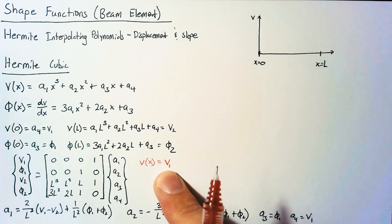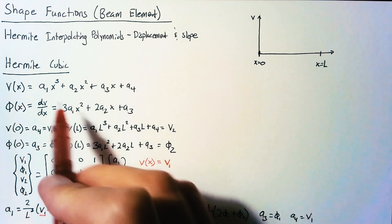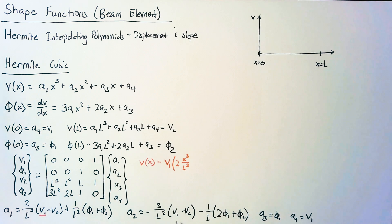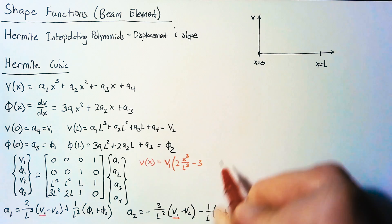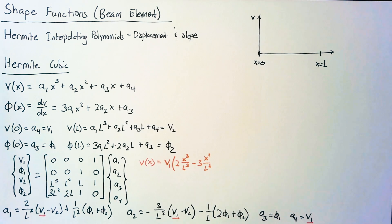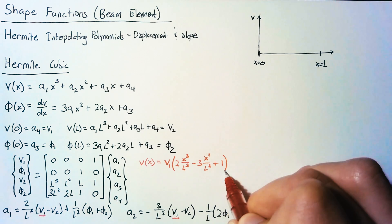So for v1, we're going to have a v1 here, and this has 2x cubed over l cubed. We also have a v1 here, so we have minus 3, and this is x squared over l squared. And then finally, we just have our a4, so this will just be 1.